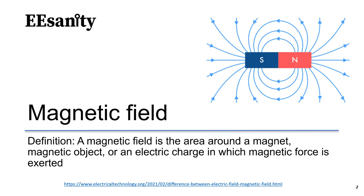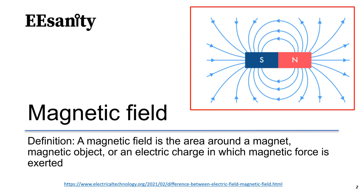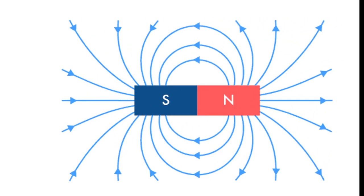A magnetic field is defined as an area around a magnet, magnetic object, or an electric charge in which magnetic force is exerted. As shown in the illustration, if we have a bar magnet, a magnetic field appears as lines that extend from the north pole of the magnet and curve around to the south pole.